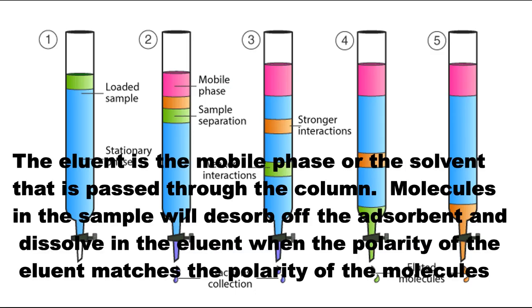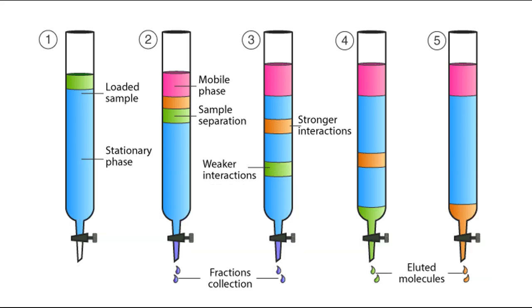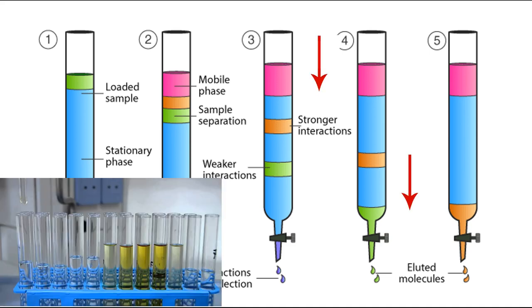The eluant is the solvent or mobile phase that passes through the column. When the polarity of eluant matches with the polarity of molecule in the sample, the molecule desorbs from solid stationary phase and dissolves in eluant, moves depending on their relative affinity. Then we can collect different fractions in test tubes.